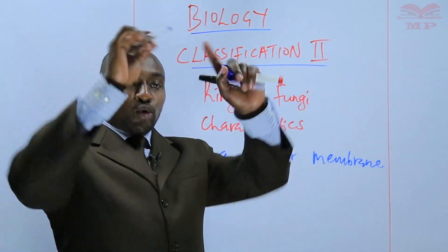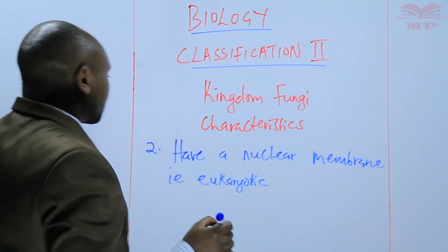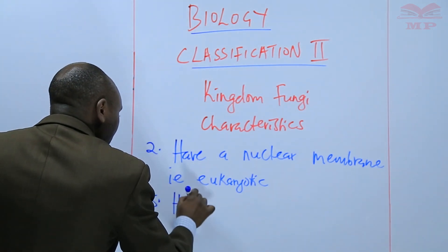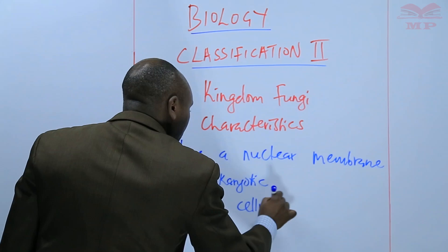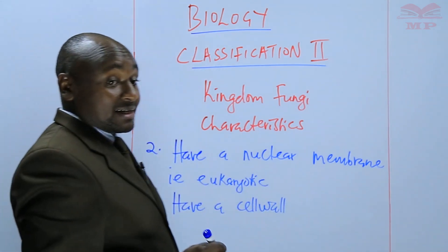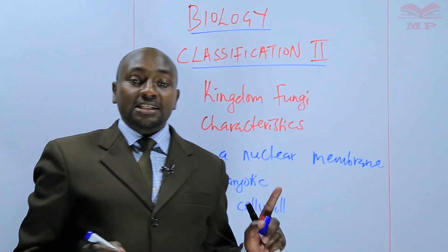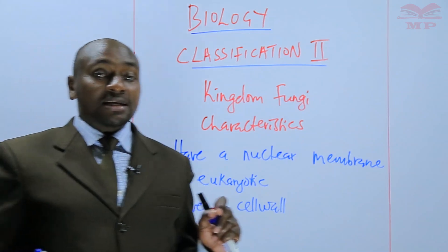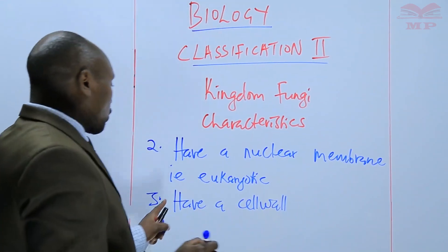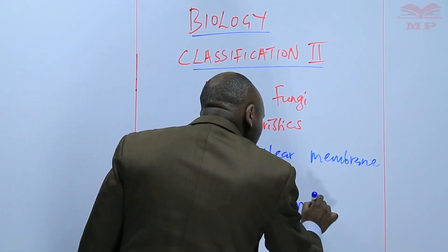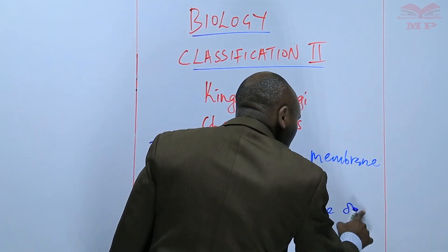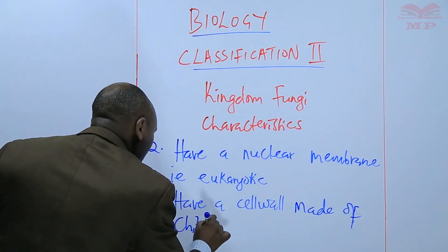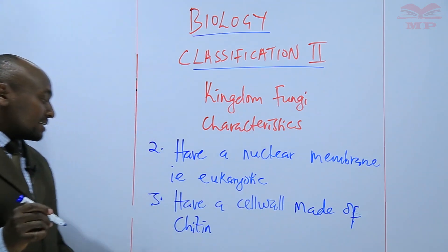That nuclear membrane encloses the nucleus. The next characteristic is that fungi also have a cell wall. But unlike plant cells, where the cell wall is made of cellulose, in fungi the cell wall is made of a substance known as chitin. So they have a cell wall made of chitin.